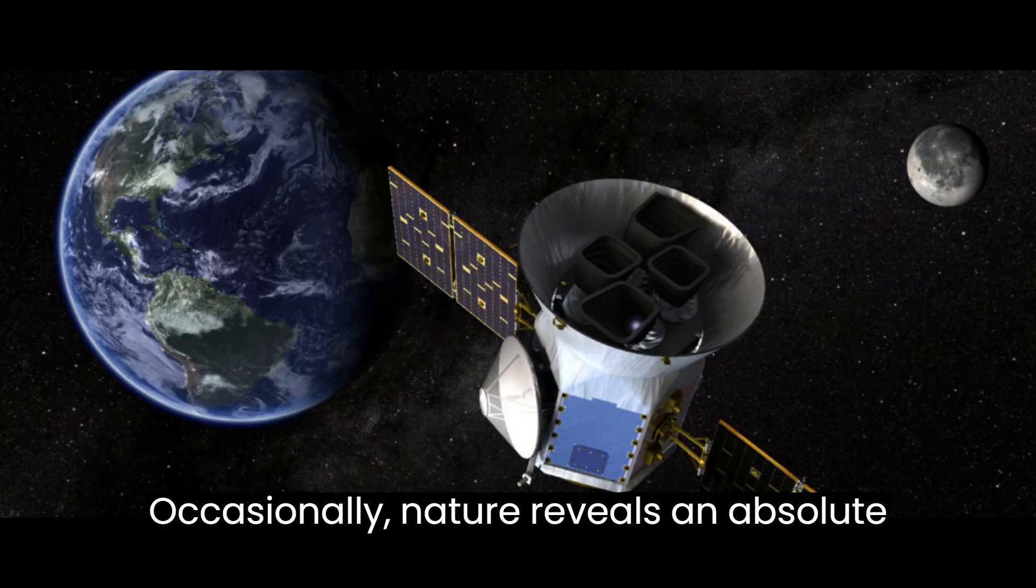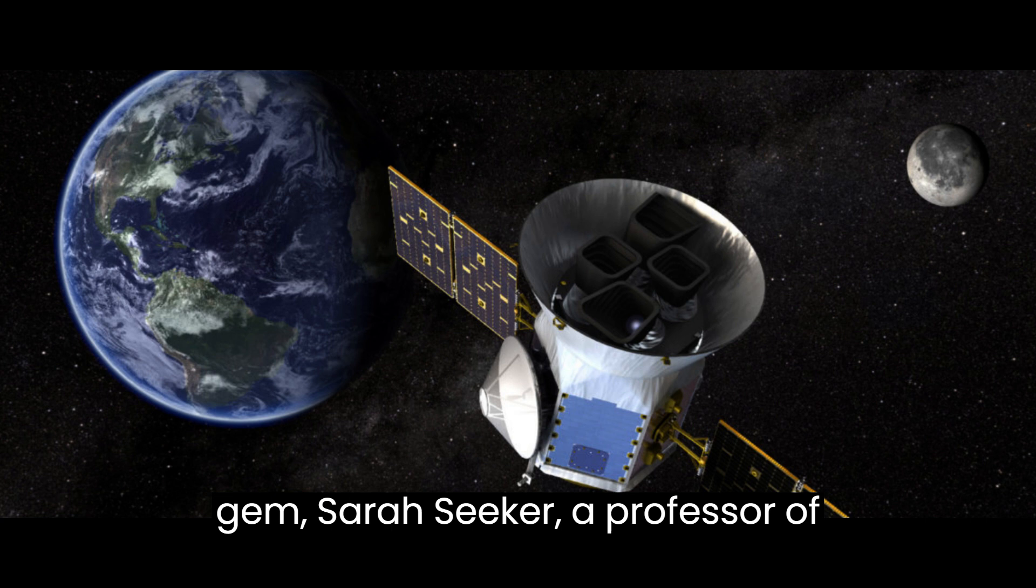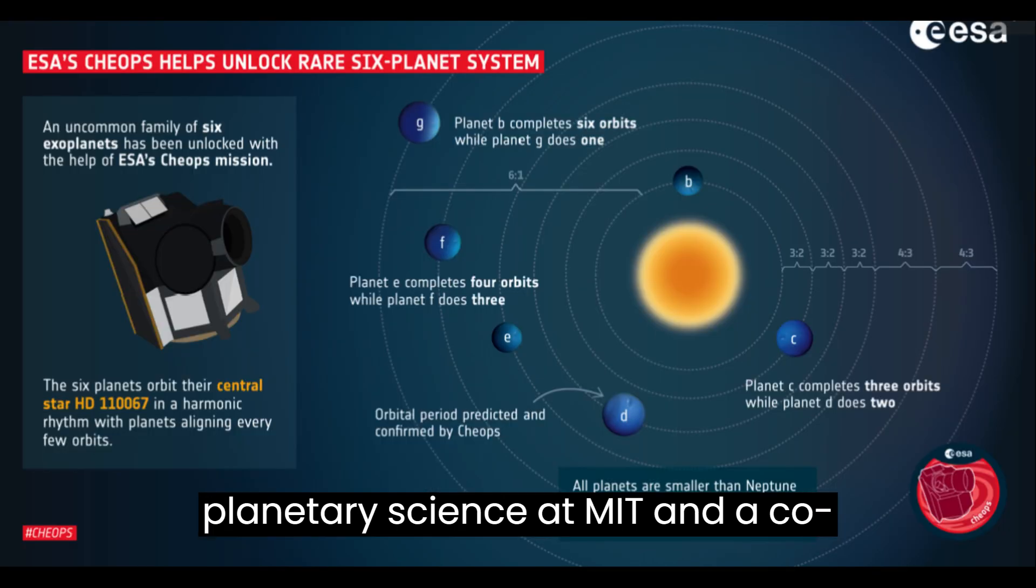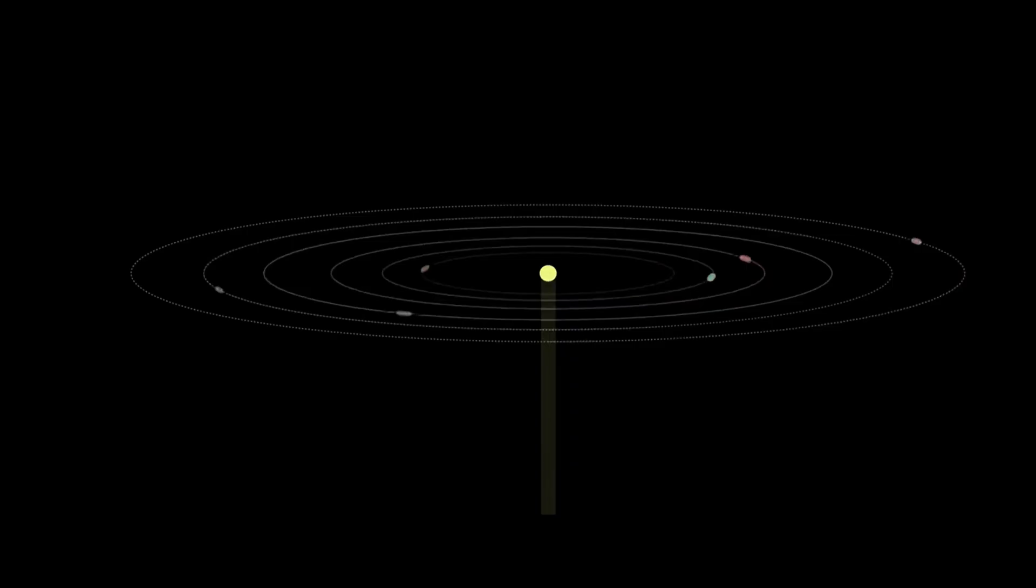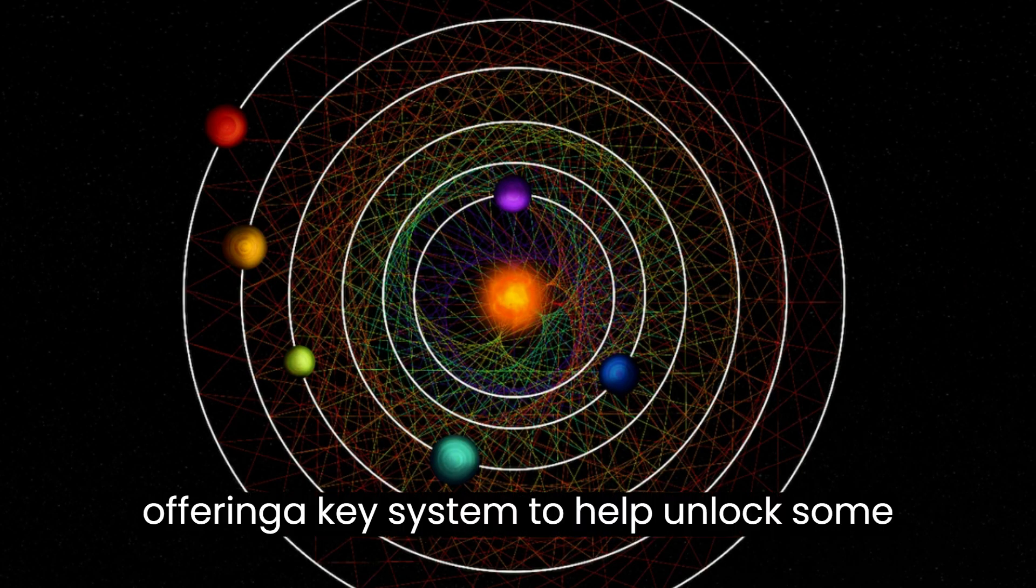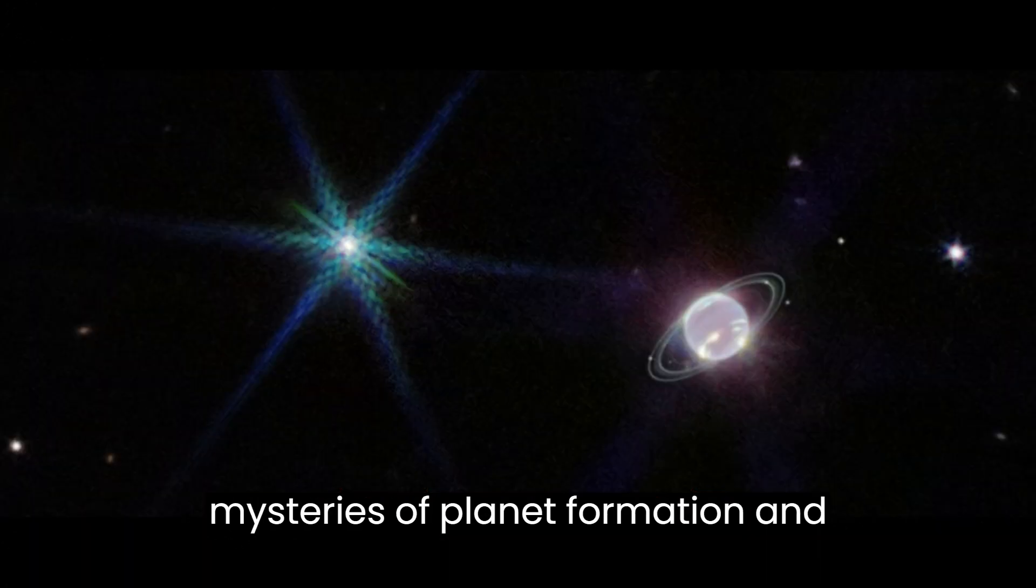Occasionally, nature reveals an absolute gem, Sarah Seeger, a professor of planetary science at MIT and a co-author of the new paper, said in an email. HD 110067 is an immediate astronomical Rosetta Stone, offering a key system to help unlock some mysteries of planet formation and evolution.